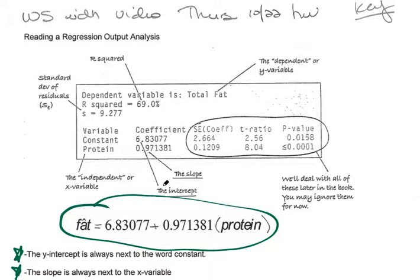The slope is always next to the x variable. So here, if constant is the y-intercept, then this word here is going to be your independent variable, your explanatory variable, and the slope is right next to it. So you take that number, put it next to the slope. The protein is my x value that goes here, and then the constant goes right here, and then you put your predicted value there.